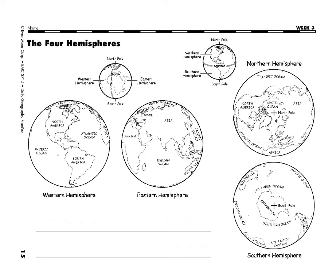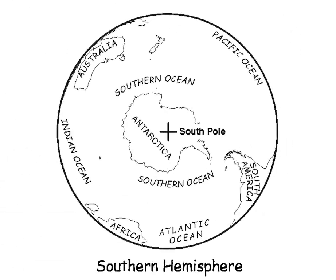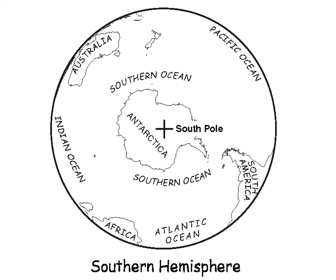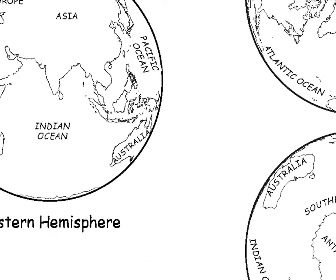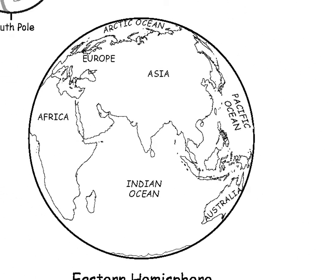Similarly, you can look at Australia, and you would see that they are in the Southern Hemisphere, but to the east of the prime meridian. So they would be in the Southeastern quadrant, or Southeastern Hemispheres.